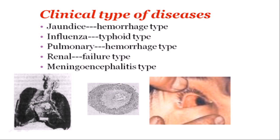There are some clinical types of leptospirosis. Jaundice causes a hemorrhagic-type disease. Influenza-type presentation causes typhoid-type disease. Pulmonary involvement causes hemorrhagic-type and renal failure-type disease. And meningitis-type disease also occurs.